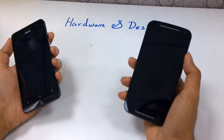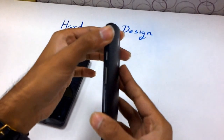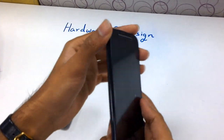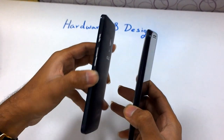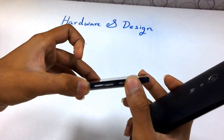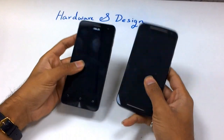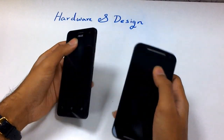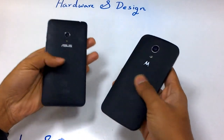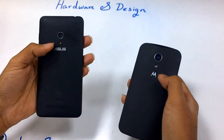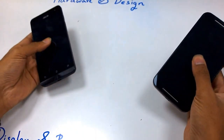The Moto G manages to look short and compact but at the expense of being thicker than the Asus Zenfone 5. Although the build quality is excellent and very comparable to premium handsets, the Asus Zenfone 5 manages to have brushed metal at the sides and the bottom which really makes it stand out. Both are pretty good to feel and there is a black matte rubberized finish at the back which is pretty similar on both phones — the Asus has an Intel branding and the Motorola has the M logo.